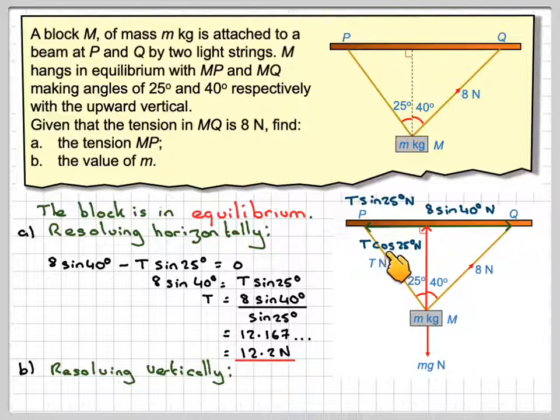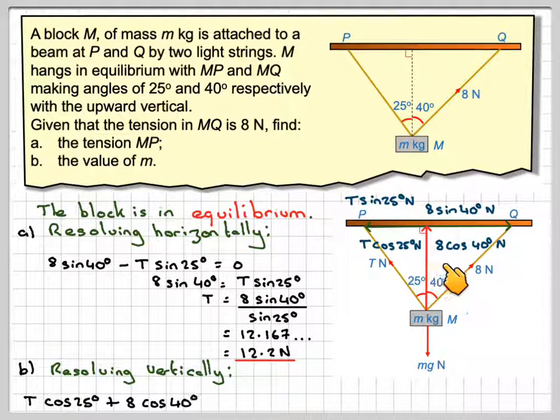So this one will be T cos 25 newtons using our trigonometry, and this one will be 8 cos 40. And then acting downwards will be mg, so we'll need to take away mg, and that's then equal to zero because it's in equilibrium.